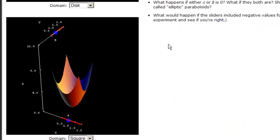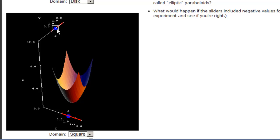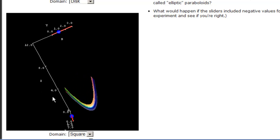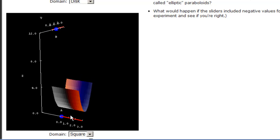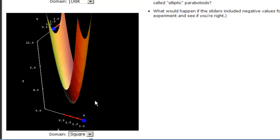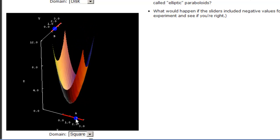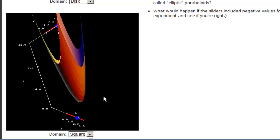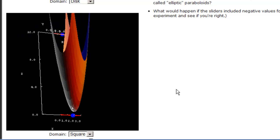You can also get another view of what happens if you change the constants A and B. So if we let A get very small, it turns into just a parabola. If you let A get very large, it stretches it vertically. You can do the same thing for B. And then you can rotate and zoom and do all that wonderful stuff with it.